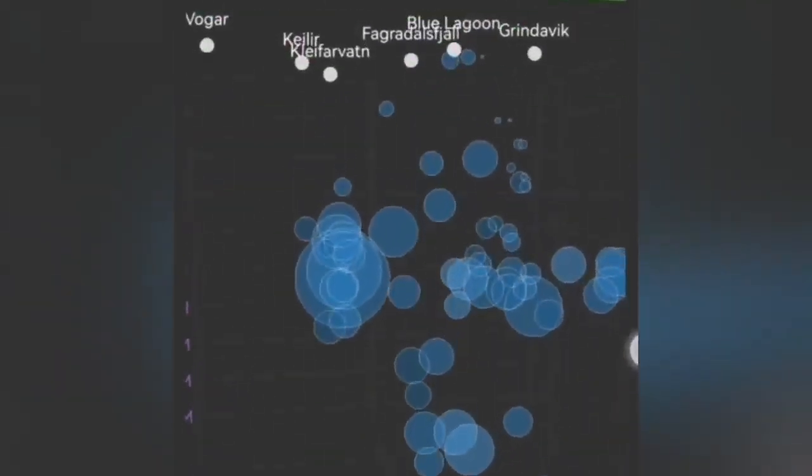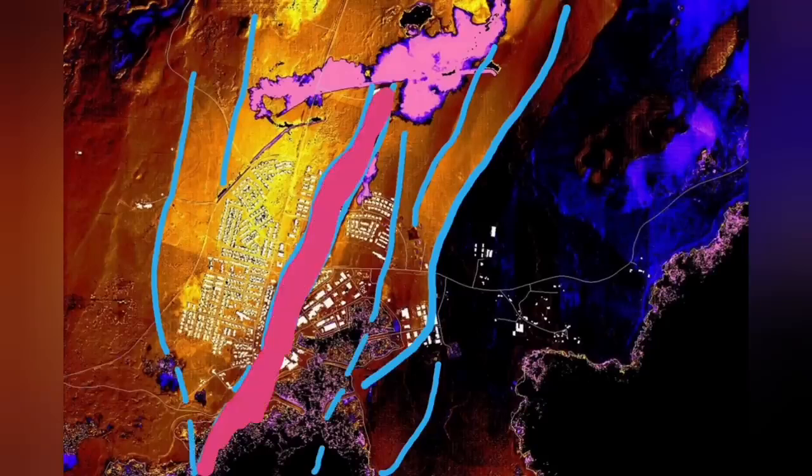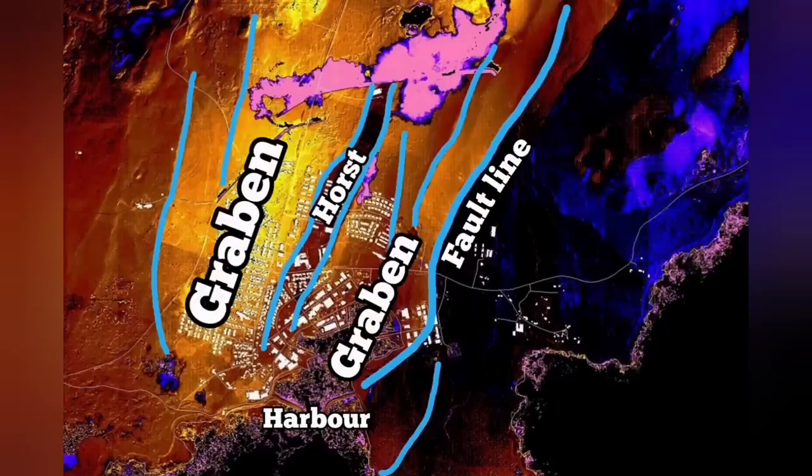In November, we had the earthquake, then December eruption, and January again eruption. Through this graben that you can see in the middle part, and the fault lines, and the horst in the middle, we had cracks in the Grindavik, but no eruption. Magma was not there.